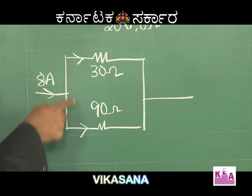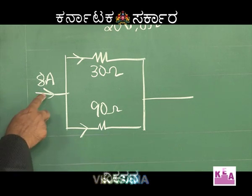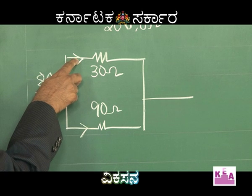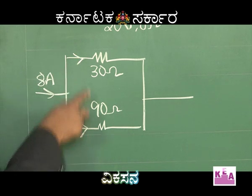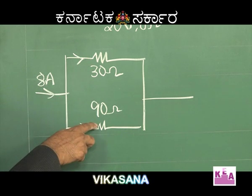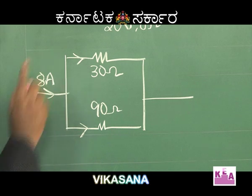Generally we used to use the current divider rule for this, but the shortcut here is to divide 8 amperes in the ratio 3 is to 1 — not 1 is to 3 — because the ratio of the resistances is inversely proportional to the ratio of the currents.